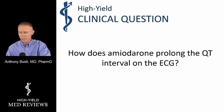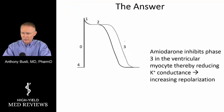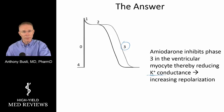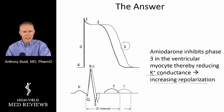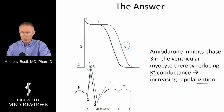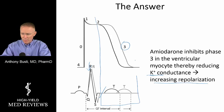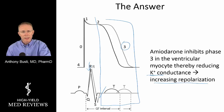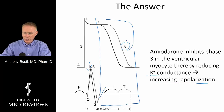How does amiodarone prolong the QT interval? Amiodarone inhibits phase III within the action potential of the ventricular myocyte, reducing potassium conductance out of the cell. That means the inside of the cell takes longer to reach a more negative state to receive another action potential from the nodal cells, increasing repolarization duration. You can see that the QT interval in particular is prolonging — versus QRS widening. There are drugs that prolong the QRS and drugs that prolong the QT interval; amiodarone predominantly affects phase III.